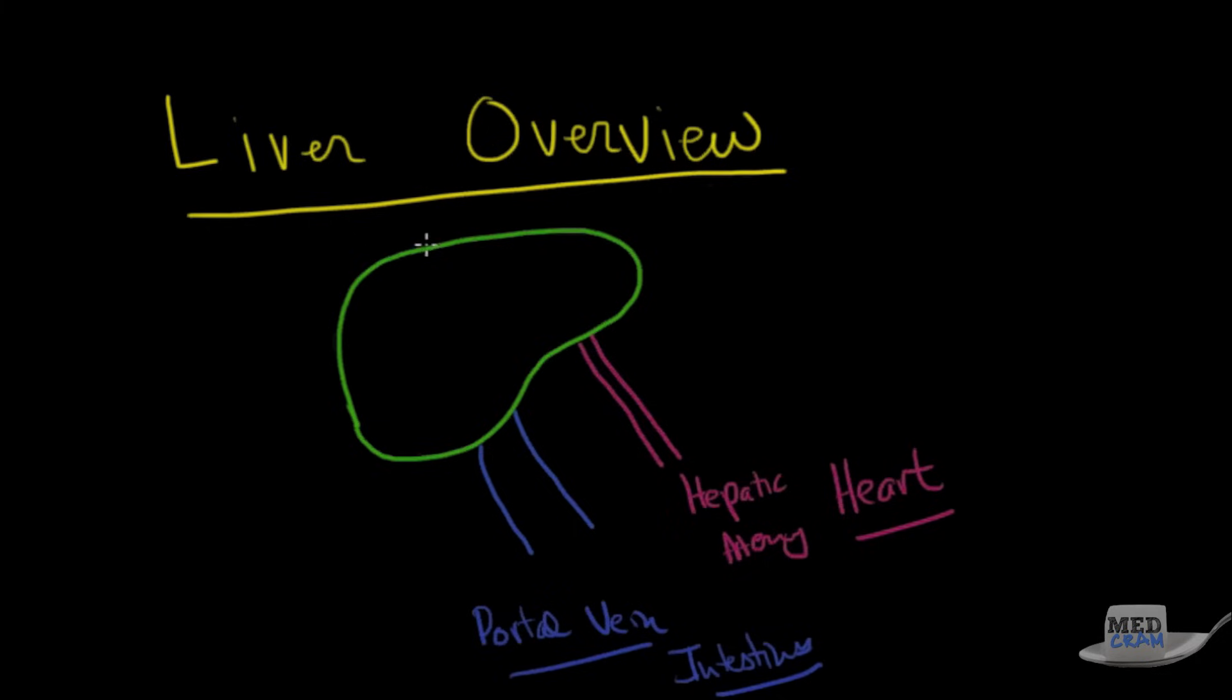And that's the next part of the drawing here is you get the hepatic vein. And so you've got two inputs and one output. And so it's got to go through the liver if it's coming from the portal vein from the intestines.